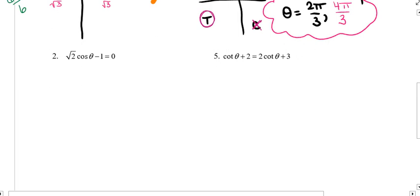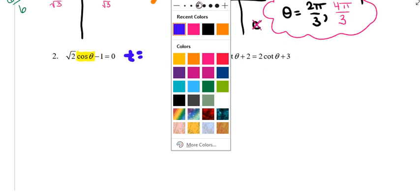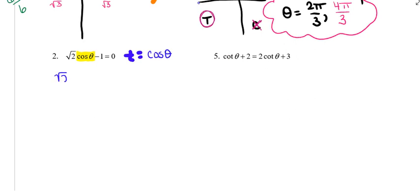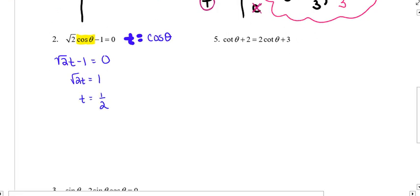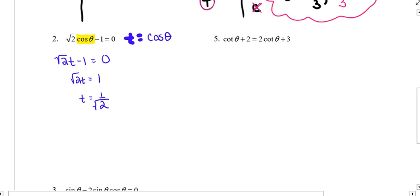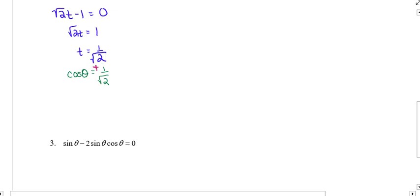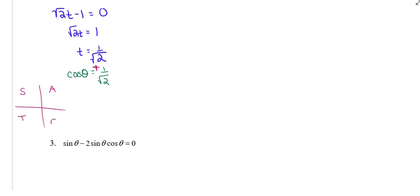Now I'm going to shoot down to number 2. I'm going to let t represent cosine of theta. So I've got root 2 times t minus 1 equals 0. I'm going to add 1 to both sides and divide both sides by root 2, giving me t equals 1 over root 2. I go back in and replace t with cosine of theta. The sign is positive, so I want the quadrants where cosine is positive, which leaves me in quadrants 1 and 4.